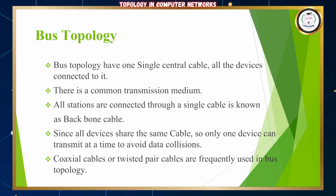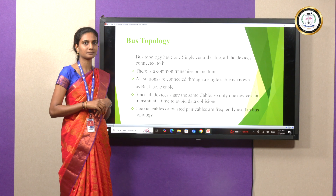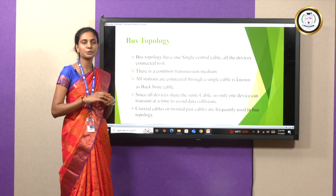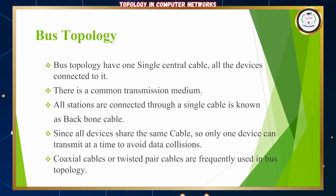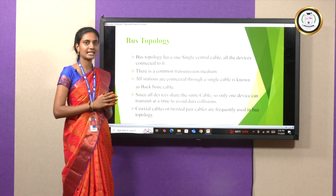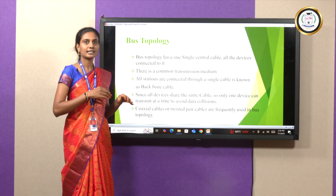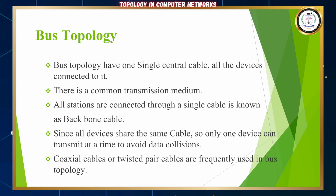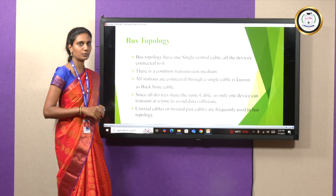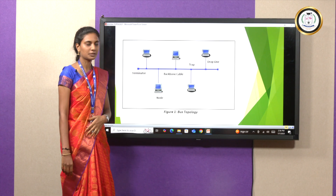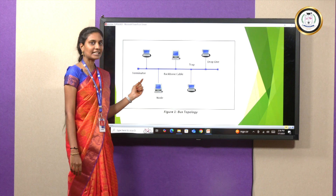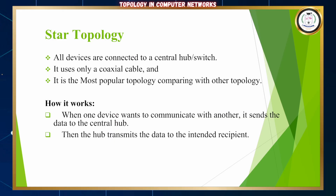The next one is bus topology. In bus topology, all the devices are connected through a single line or cable. Without that cable, we are not able to transfer messages to other devices. There is a common transmission medium, and all the devices share messages on the single line. Only one device can send the message at a time to avoid collisions. Coaxial cable and twisted pair cables are frequently used in bus topology. In the diagram, all devices are connected through the single line called a backbone cable.